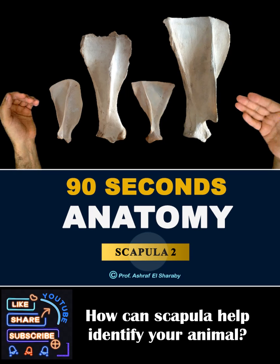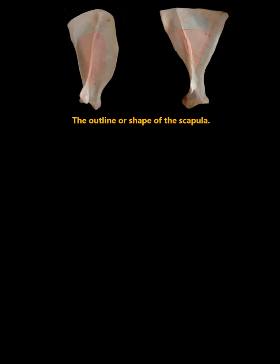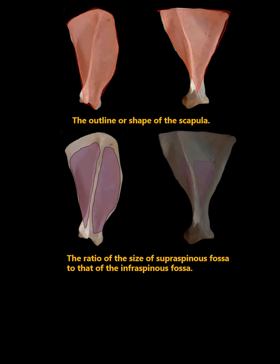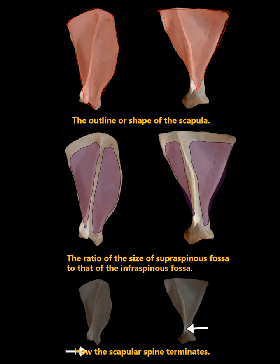The anatomical features of the lateral surface of the scapula are quite enough for a successful identification of the animal species. Specifically, we consider first the outline or the shape of the scapula, second the ratio of the size of the supra-spinous fossa to that of the infra-spinous fossa, and lastly how the scapular spine terminates.